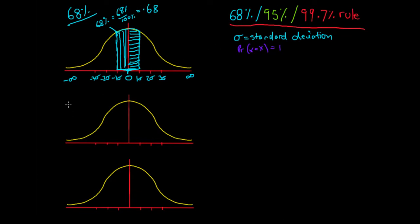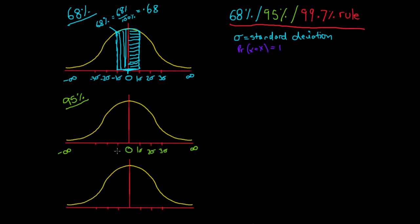We then have our 95% rule, which is very similar to the 68% rule. We still have a mean at 0; numbers to the right go toward positive infinity giving positive standard deviations, and numbers to the left go toward negative infinity giving negative standard deviations. So we have one, two, and three standard deviations on the right, and negative one, negative two, and negative three standard deviations on the left.